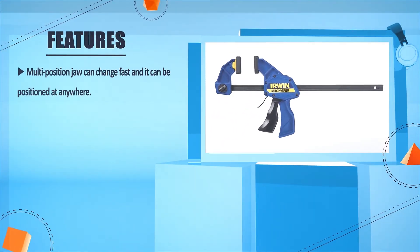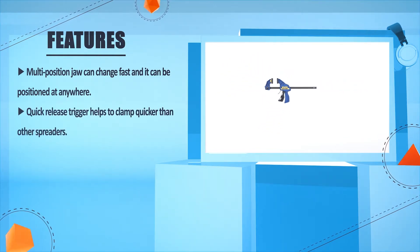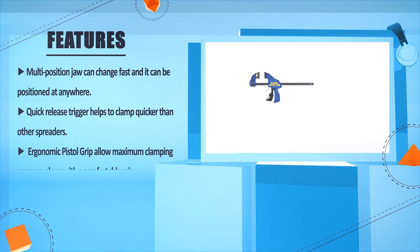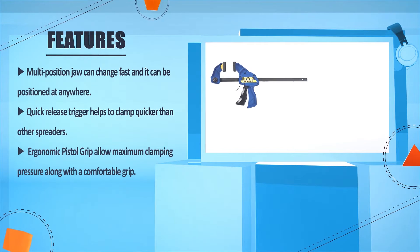Multi-position jaw can change fast and it can be positioned anywhere. Quick Release Trigger helps to clamp quicker than other spreaders. Ergonomic Pistol Grip will allow maximum clamping pressure along with a comfortable grip.